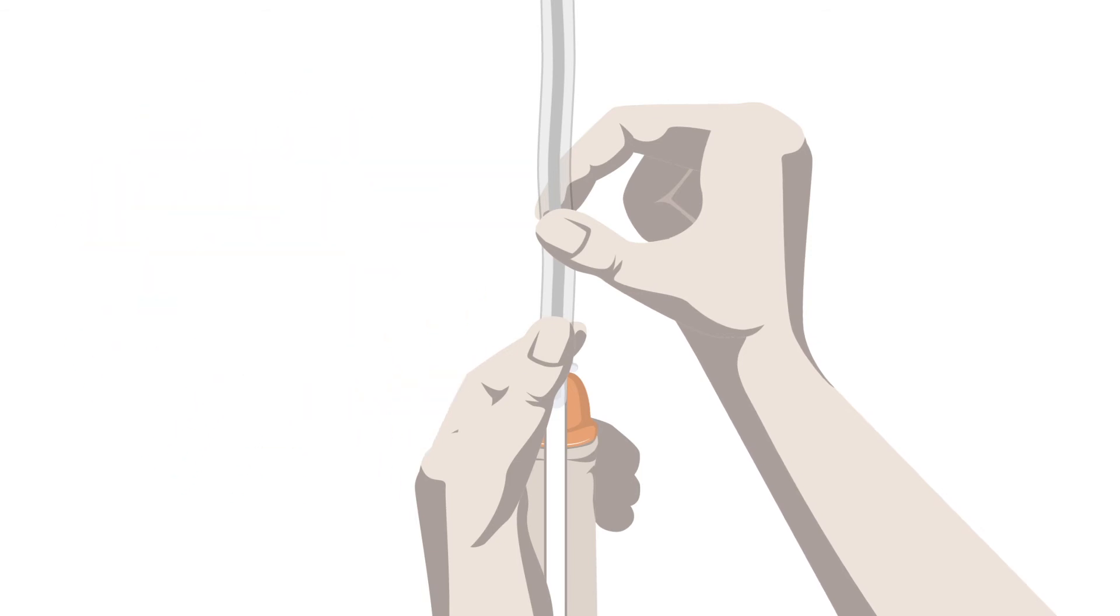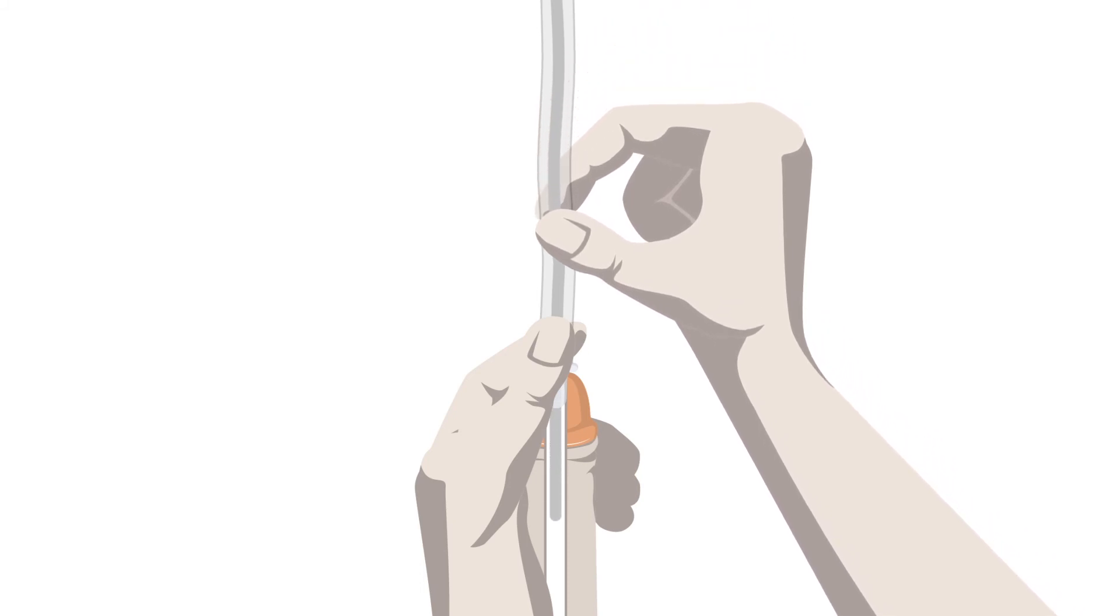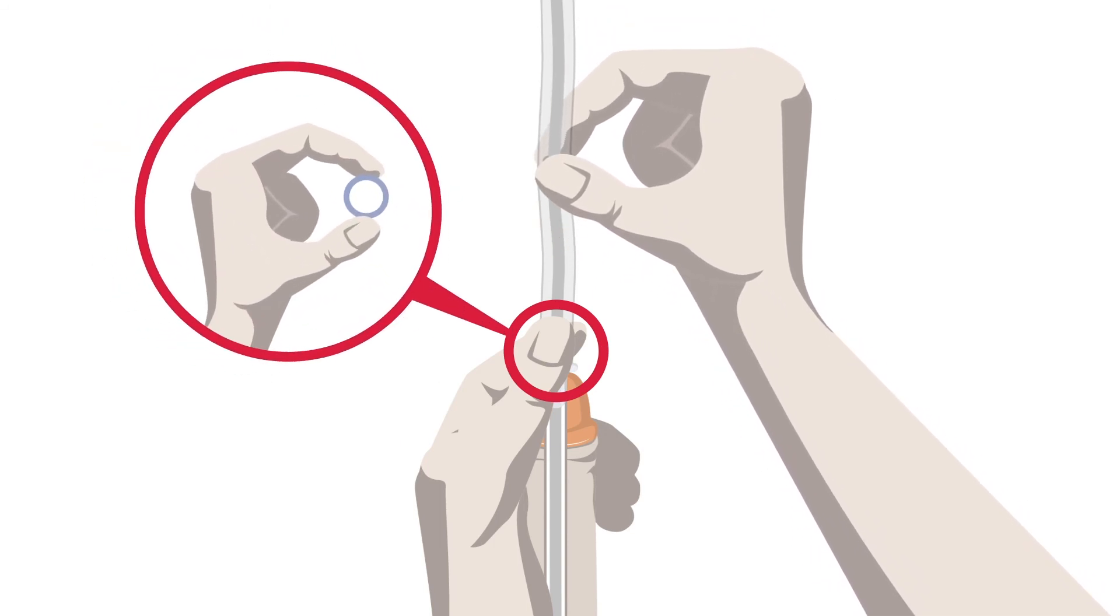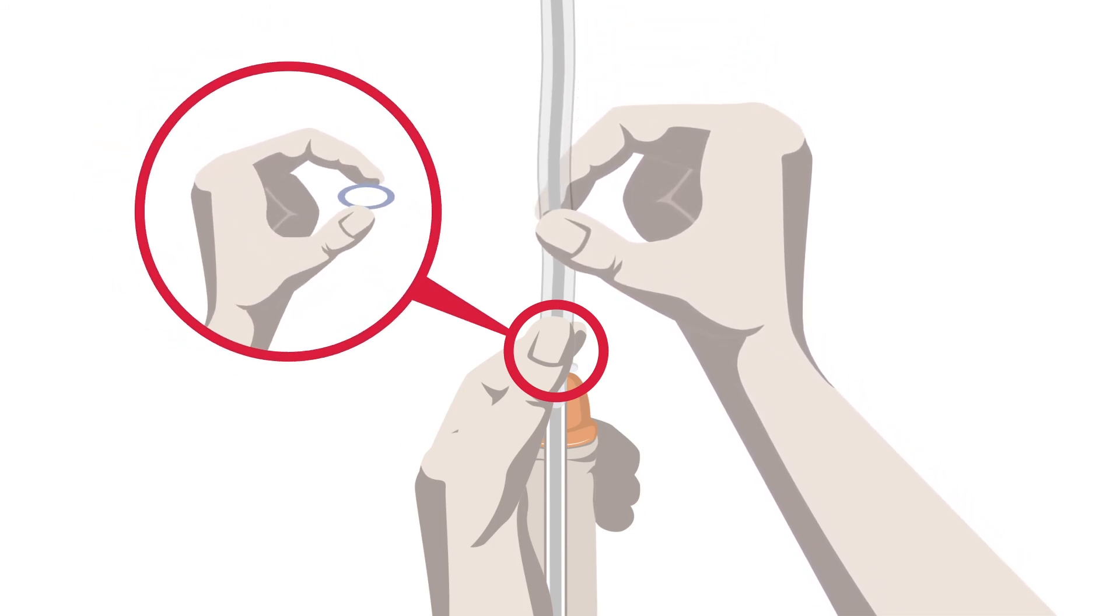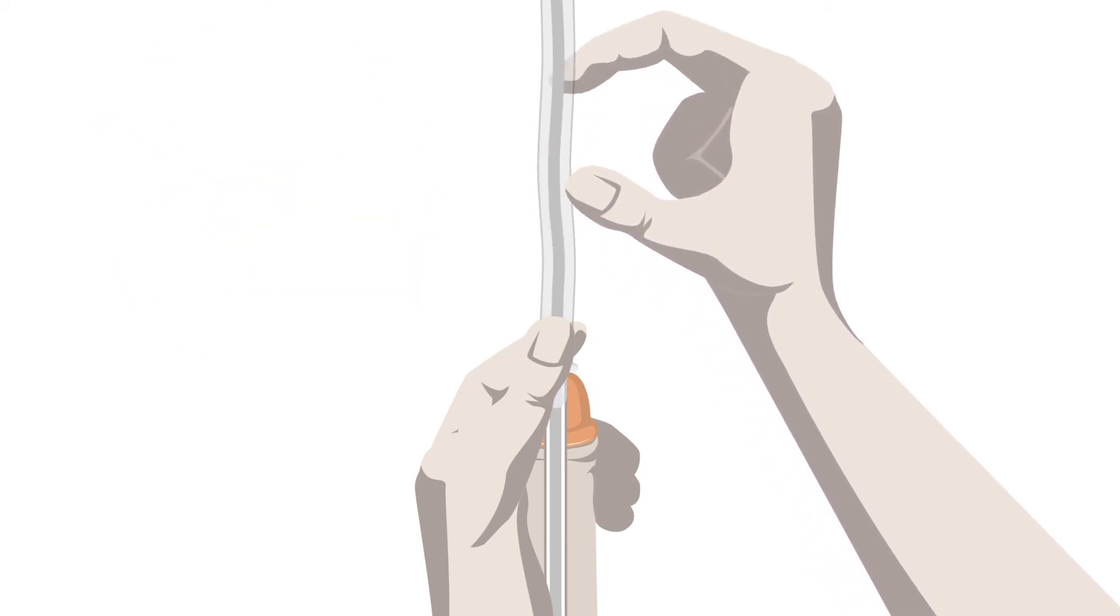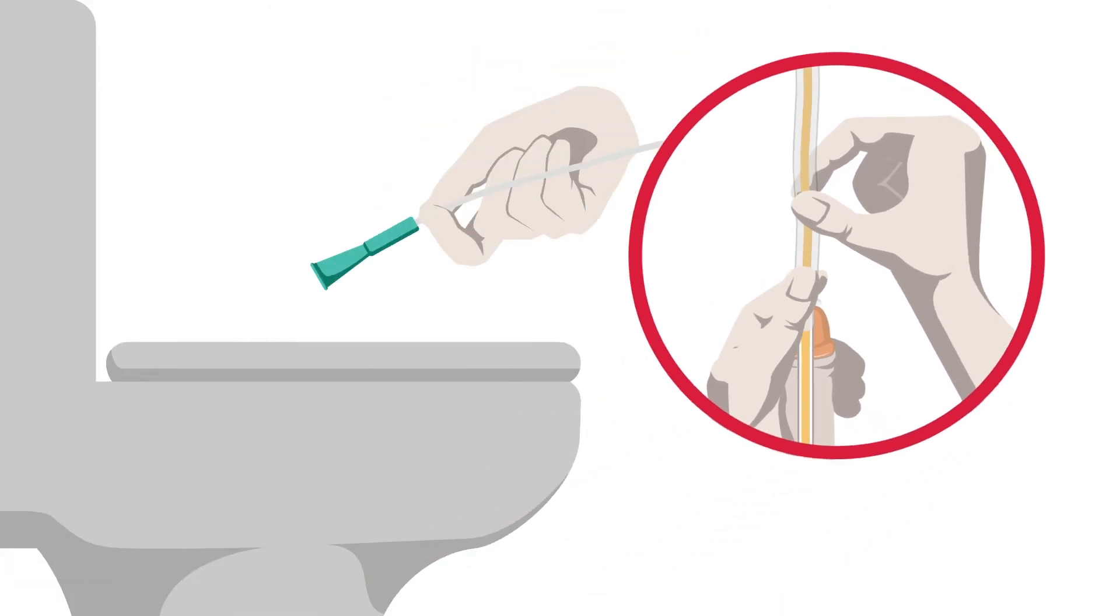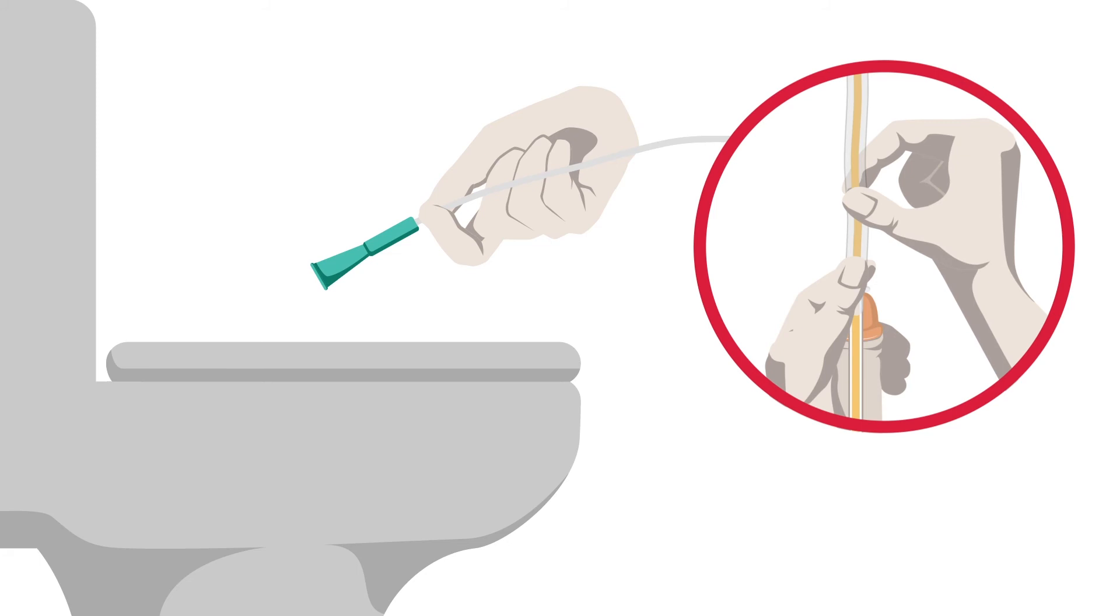Start to insert the catheter in short incremental pushes to allow the catheter to gently move up the urethra into the bladder. You can steady the catheter by putting pressure on the barrel whilst you move your hand to insert further. Insert the catheter forward until urine starts to flow. Be prepared to manage the funnel of the catheter into the direction of toilet or receptacle before the urine starts to flow.